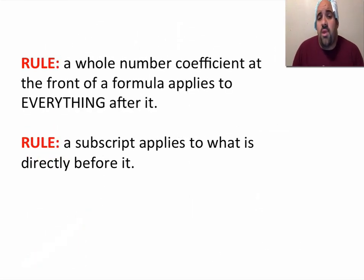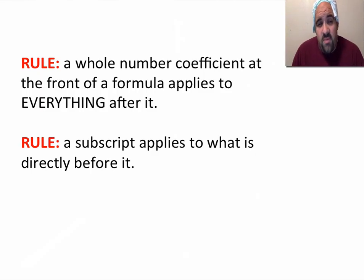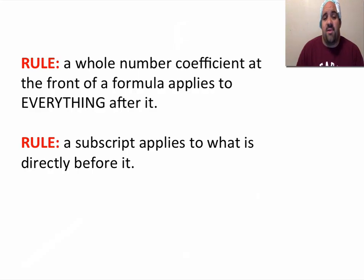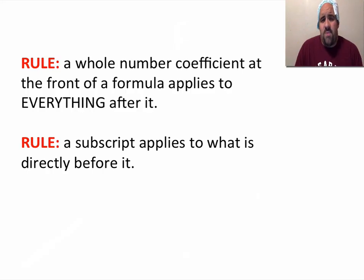So there are two rules. A whole number coefficient at the front of a formula applies to everything after it — you multiply it all at the end. And a subscript applies to what is directly before it; if there's a parenthesis unit, it's everything in the parentheses. Hopefully now you can count atoms, read chemical formulas, and understand a little better what they mean. This is Mr. Sapone — I'm out. And hopefully that joke was funny.